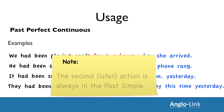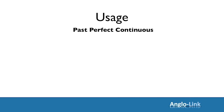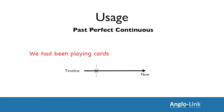They had been flying to Tokyo for a few hours by this time yesterday. Note again that the second or later action is always in the past simple tense. Timeline: we had been playing cards for two hours when she arrived.